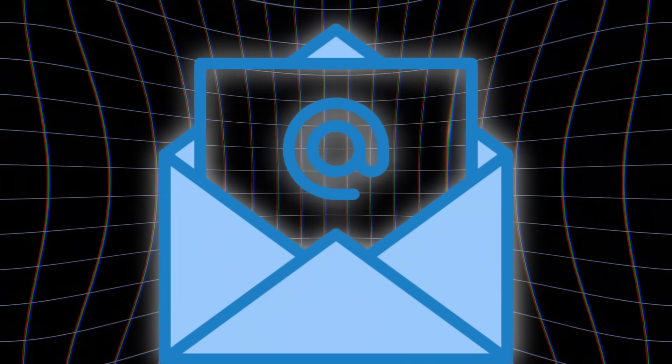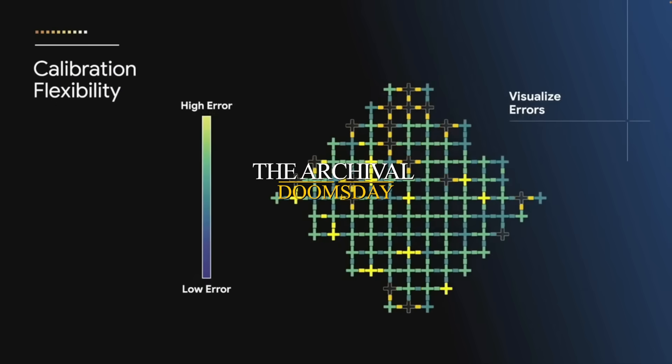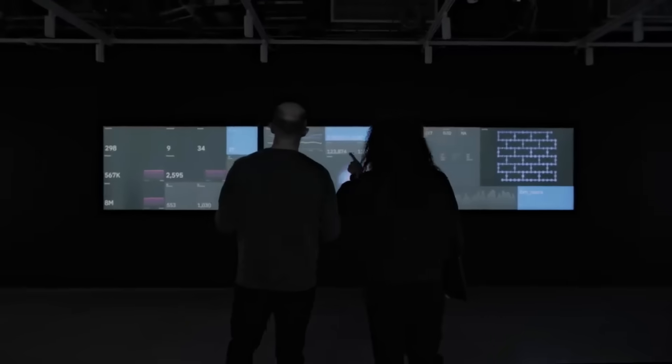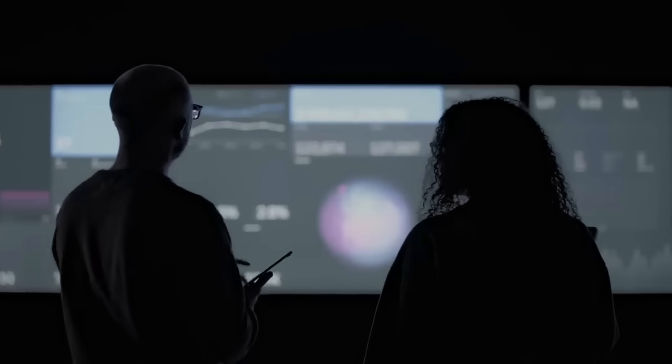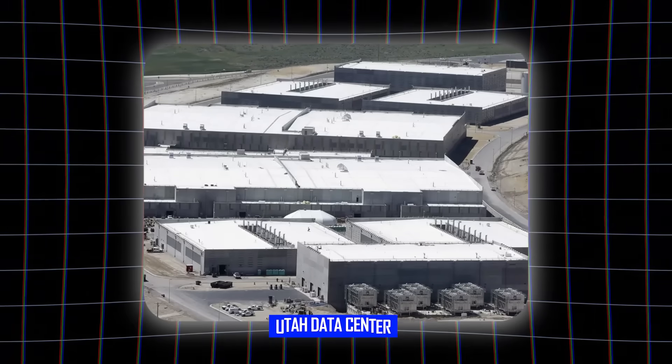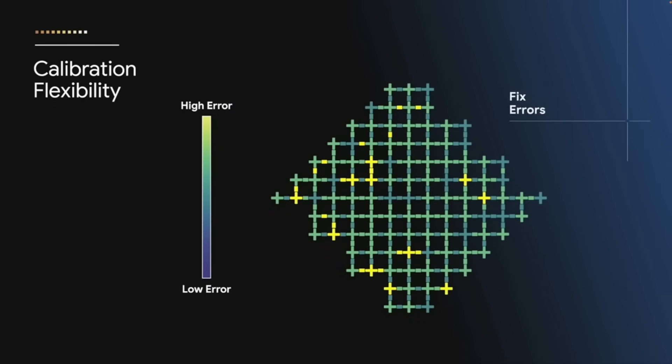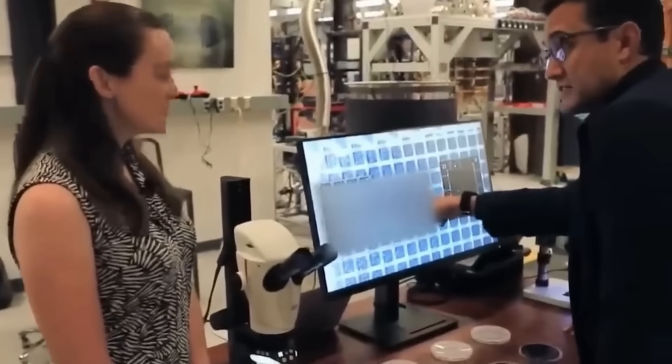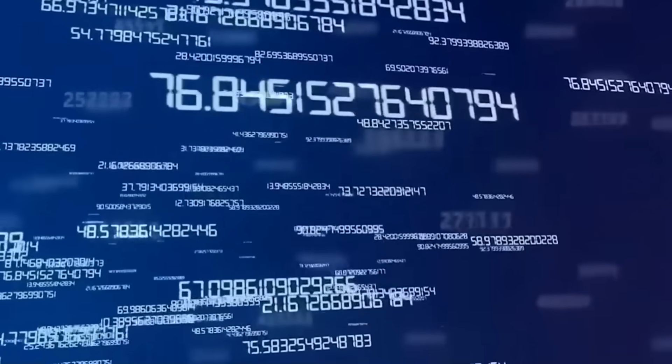We're not just talking about your future emails being at risk. We're facing what experts call the archival doomsday. Intelligence agencies worldwide have been harvesting encrypted data for decades. Storing it. Waiting. The NSA's massive Utah data center wasn't built for nothing. When, not if, quantum computers crack today's encryption, every secret ever transmitted becomes an open book. Cold War diplomatic cables, nuclear command codes, financial transactions from the 90s, your medical records from the 80s, all of it suddenly transparent.